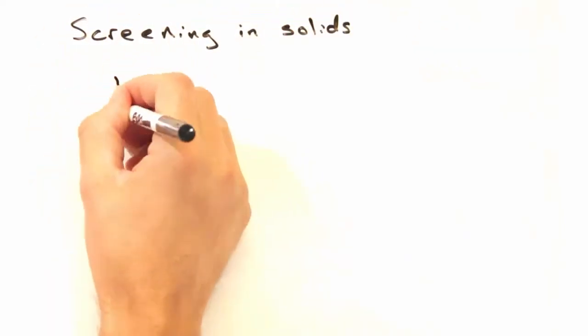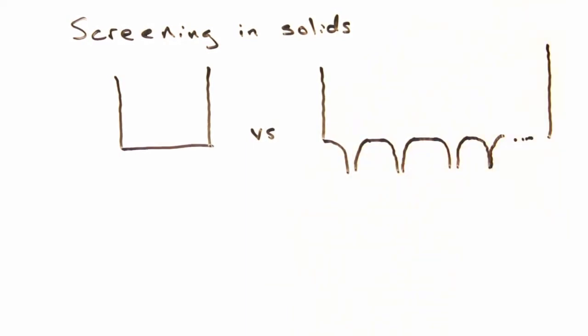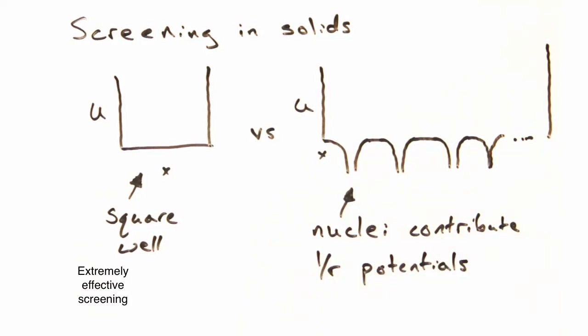Okay. But what about solids? The solids are a bit trickier. With the square well, we're assuming screening is so effective there's no spatial variation in the potential within the solid. On the other extreme, we could assume the screening is weak and then we'd have a 1 over r coulombic potential for the nuclei.